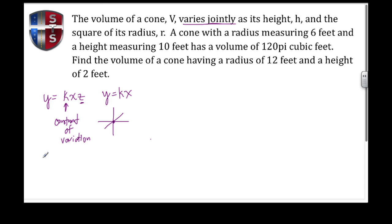Here we see 'varies jointly,' and the volume V is going to correspond to y. So V equals the constant of variation k, times the height h in place of the x variable, times r squared.